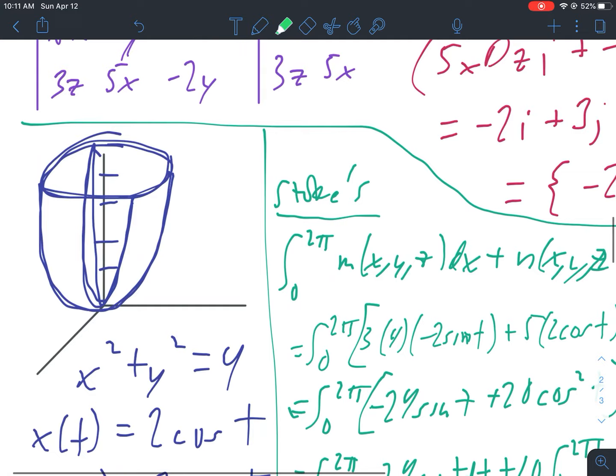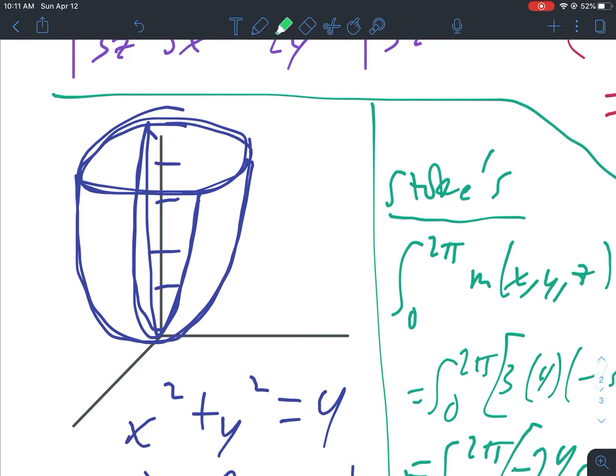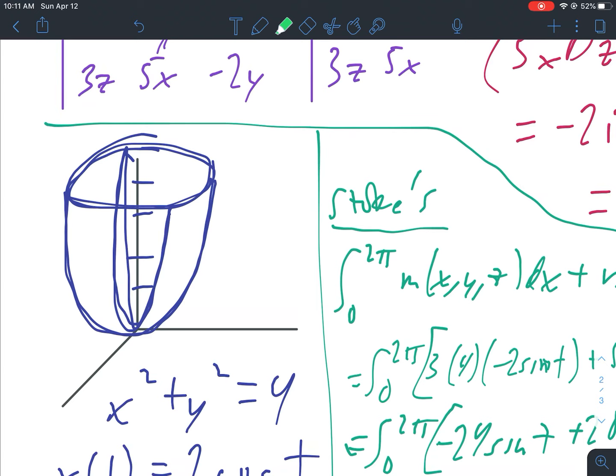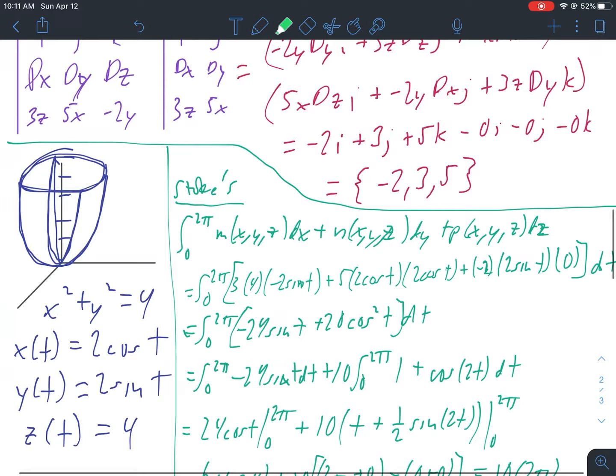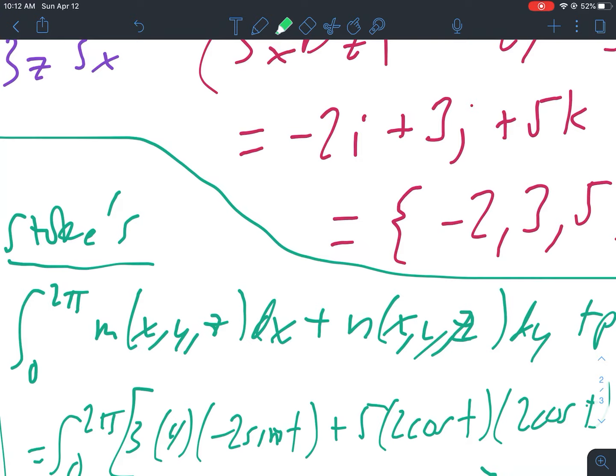Then I drew a picture over here - you can see the picture there - and set up some equations. So the top of that figure there is x squared plus y squared equals four. And here are my parametric equations.